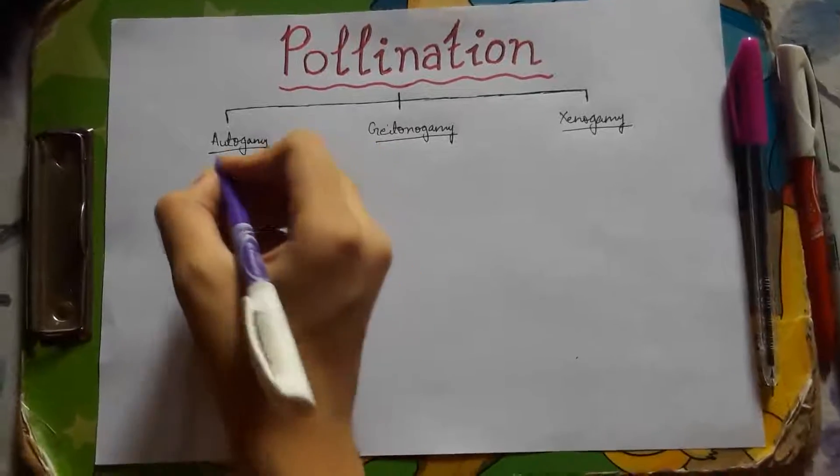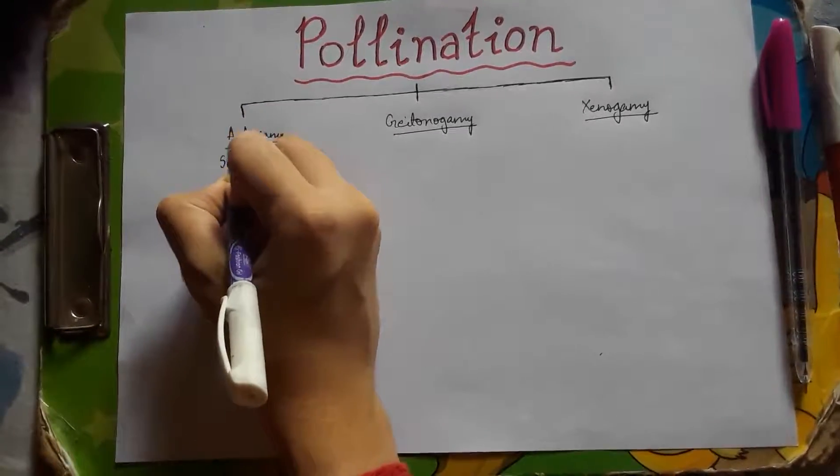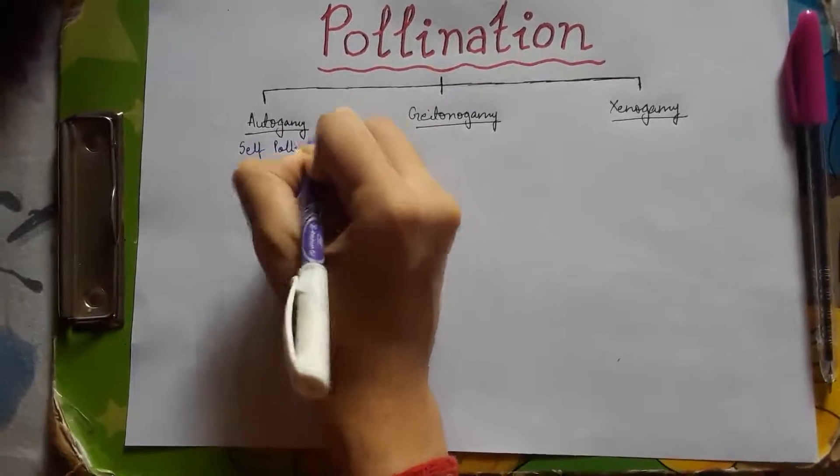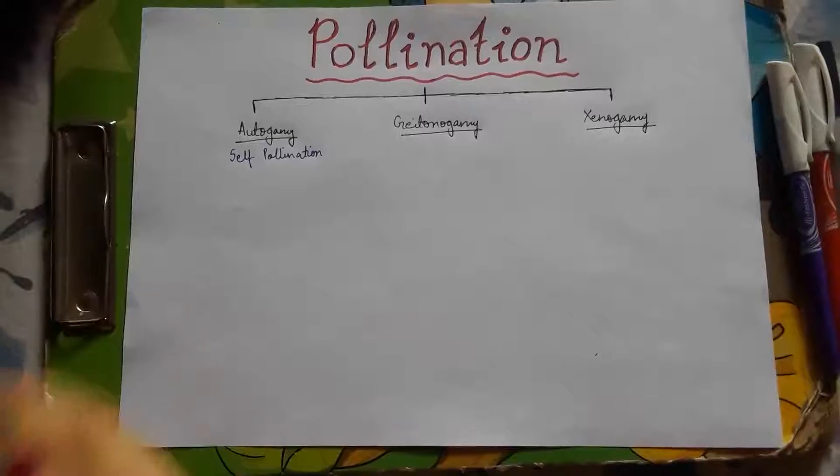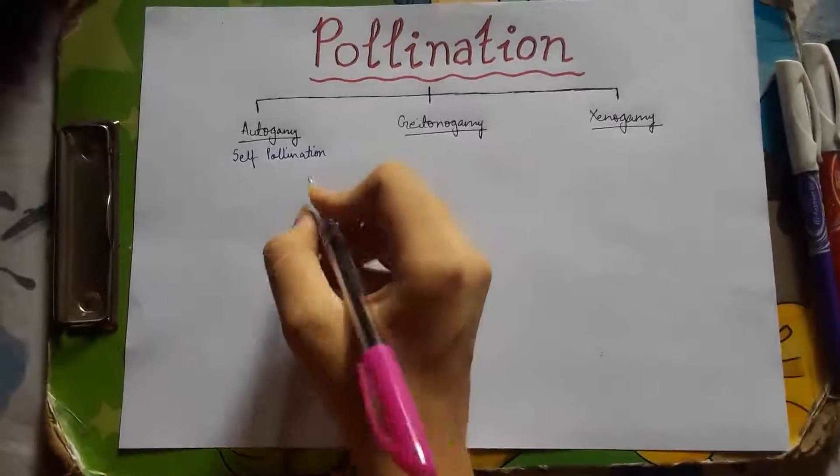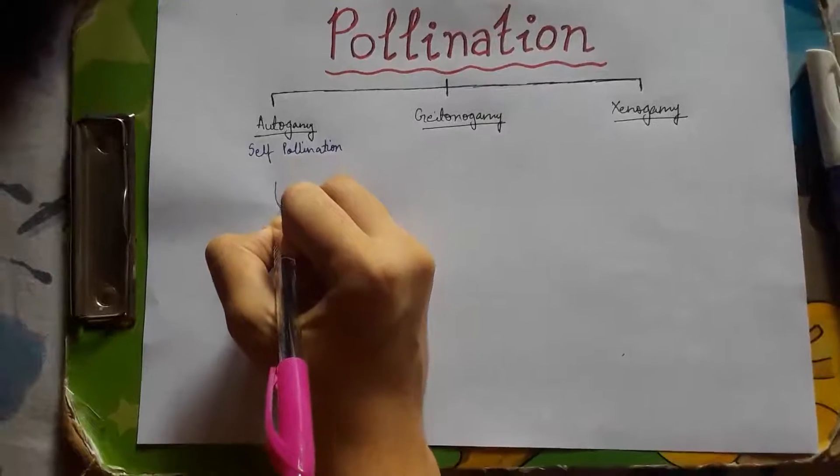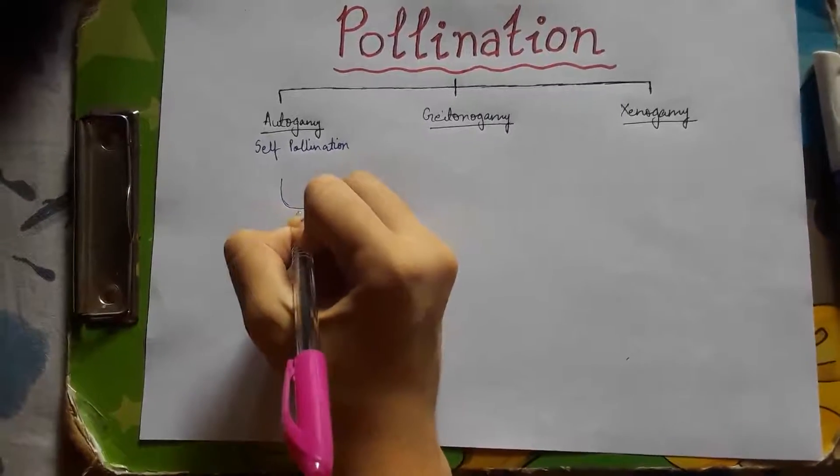Let's start with autogamy. It is also called self-pollination. This is because it refers to the transfer of pollen grain from the anther of a flower to the stigma of the same flower of one plant only.